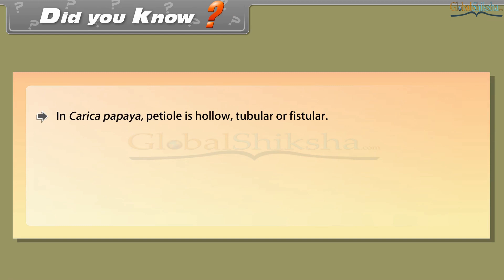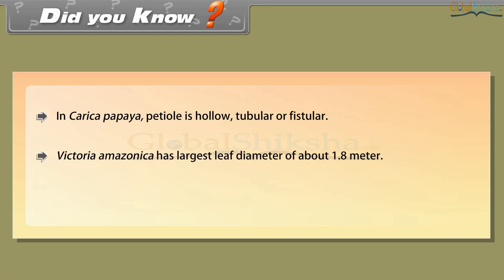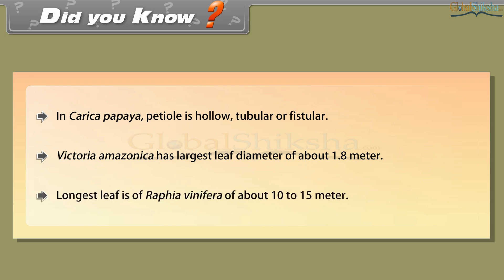Did you know? In Carica papaya, the petiole is hollow, tubular or fistular. Victoria amazonica has the largest leaf, with a diameter of about 1.8 meters. The longest leaf is that of Raffia vinifera, at about 10 to 15 meters.